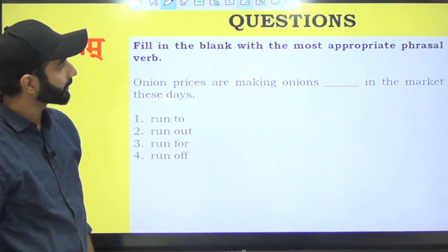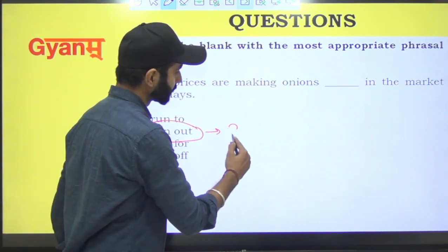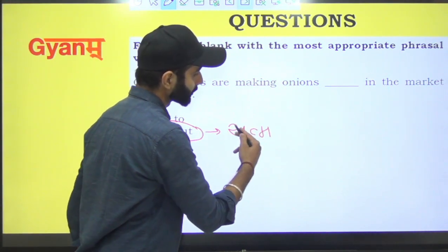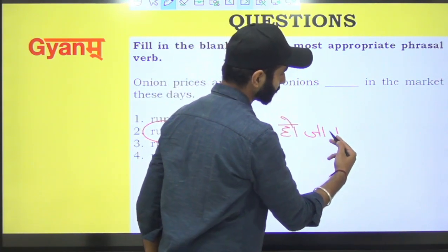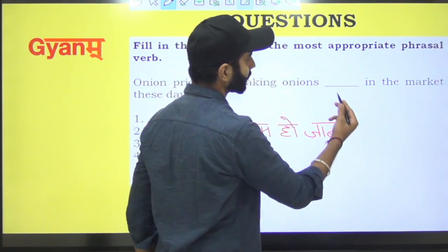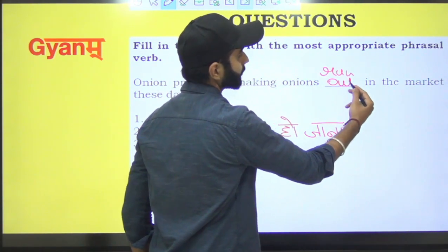Onion prices are making onions run out. Run out ka matlab hota hai khatam ho jaana.